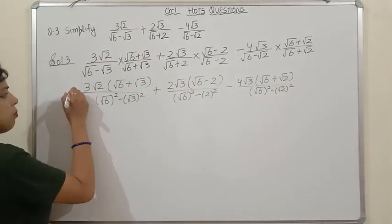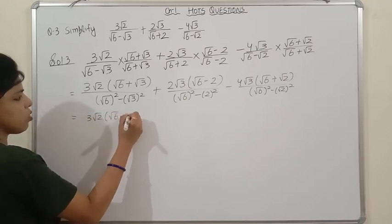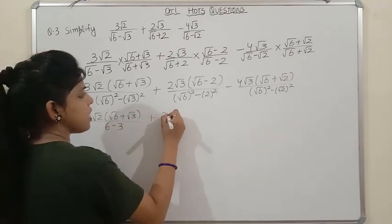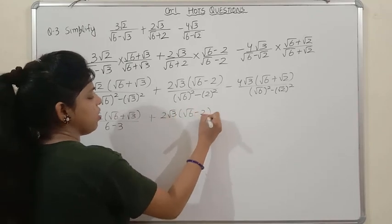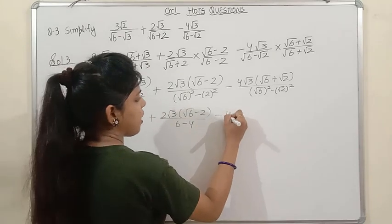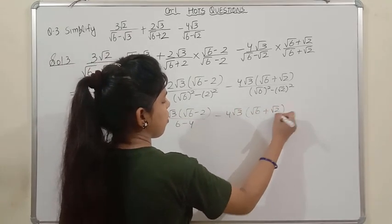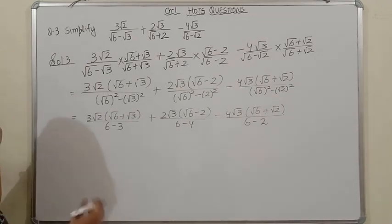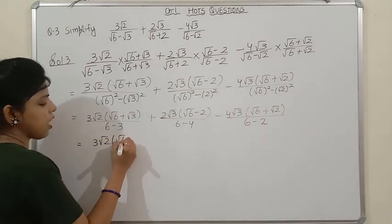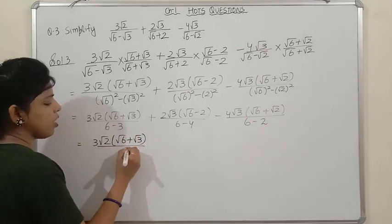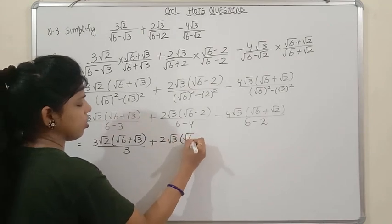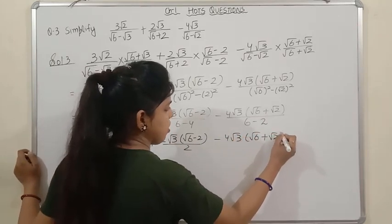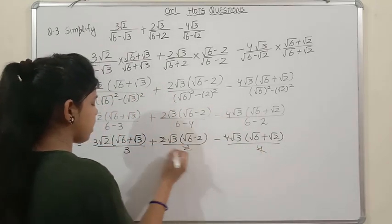Applying a² − b²: first term denominator becomes √6² − √3² = 6 − 3 = 3; second term denominator becomes √6² − 2² = 6 − 4 = 2; third term denominator becomes √6² − √2² = 6 − 2 = 4. The denominators 3, 2, and 4 cancel with the numerator coefficients. Then expanding: √2·√6 = √12, √2·√3 = √6, √3·√6 = √18, and so on.